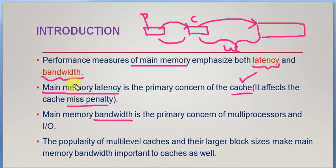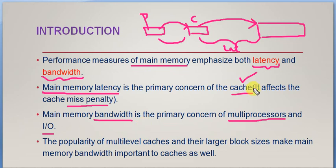The second performance measure is bandwidth, which is the primary concern of multi-processors and I/O devices. When multiple processes execute simultaneously, it determines how much data — total bytes per second — can be accessed by different processes. Latency is the time taken for retrieving data; bandwidth is the amount of data that can be transferred within a given time. Both affect the overall performance of the main memory.